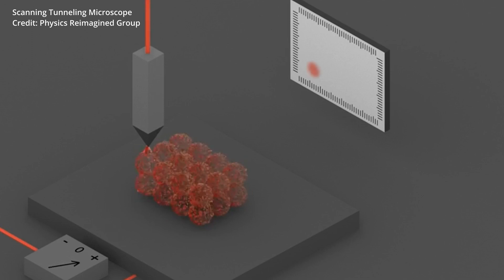If the tip gets close enough, then the barrier width becomes small enough to induce quantum tunneling of electrons from the surface to the tip, generating a measurable current.